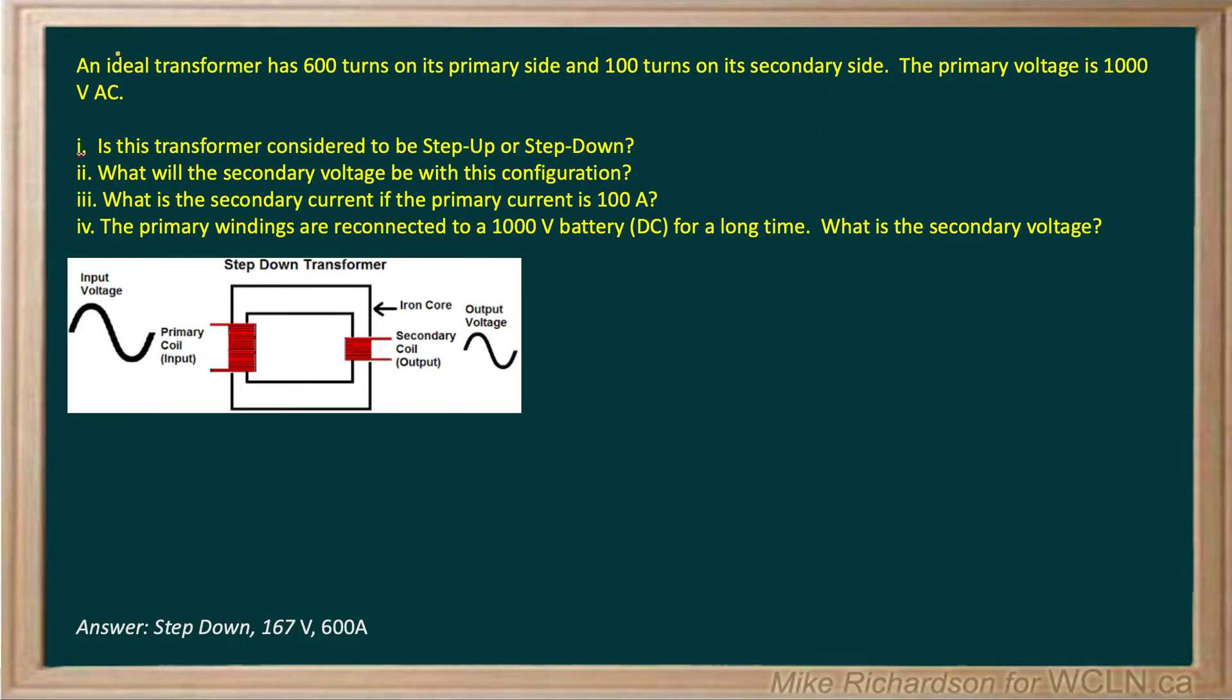Here we've got an ideal transformer. When we see that word we assume 100% transmission of power, so our equations are much more simply configured. We've got 600 turns on its primary side.